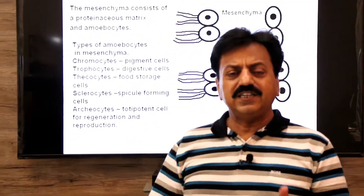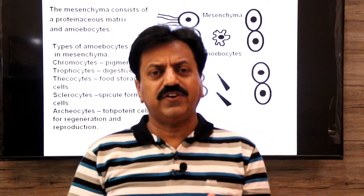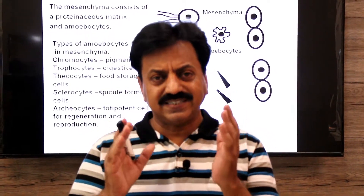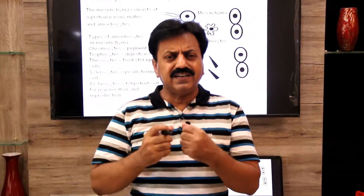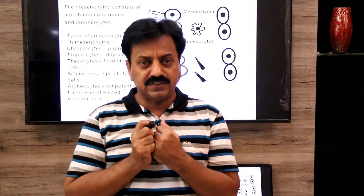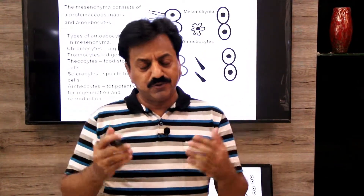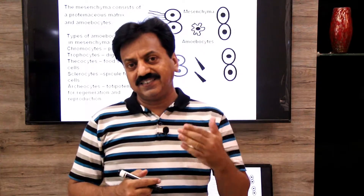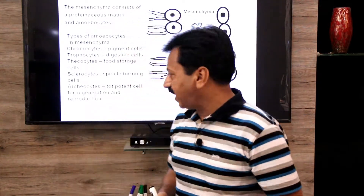If the body of a sponge is cut accidentally into many pieces, each piece will grow and form a complete sponge, due to totipotent cells called archaeocytes.